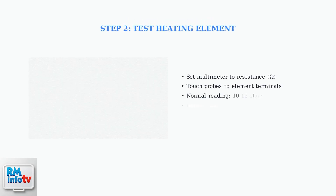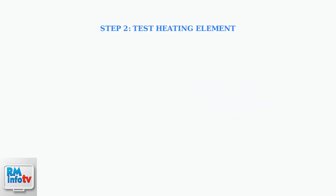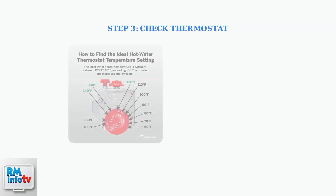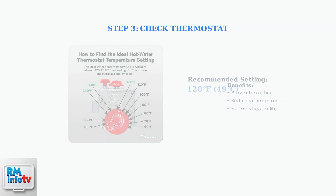Next, test the heating element using a multimeter. A damaged element will show abnormal resistance readings and should be replaced immediately. Check the thermostat for proper function and ensure it's set to the recommended temperature of 120 degrees Fahrenheit to prevent scalding while maintaining efficiency.